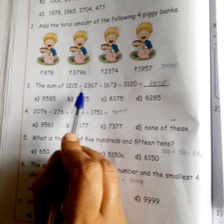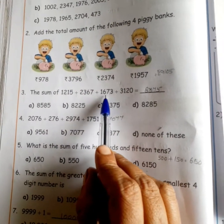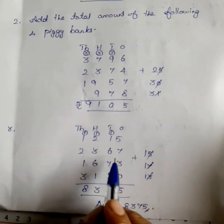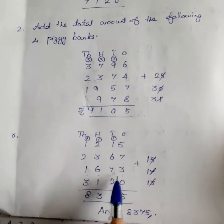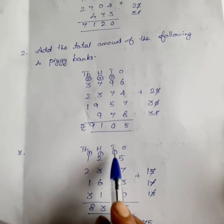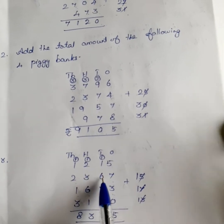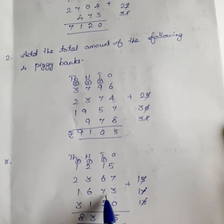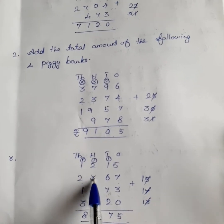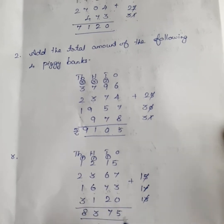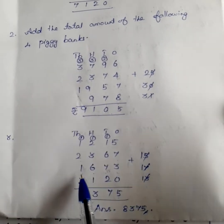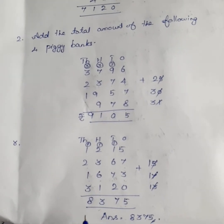The sum of 1,215 plus 2,367 plus 1,673 plus 3,120. 7 plus 3 is equal to 10. 10 plus 5 is equal to 15. Remaining 1. 1 plus 1 is equal to 2. 2 plus 6 is equal to 8. 8 plus 7 is equal to 15. 15 plus 2 is equal to 17. Write 7, remaining 1. 1 plus 2 is equal to 3. 3 plus 3 is equal to 6. 6 plus 6 is equal to 12. 12 plus 1 is equal to 13. Remaining 1. 1 plus 1 is equal to 2. 2 plus 2 is equal to 4. 4 plus 1 is equal to 5. 5 plus 3 is equal to 8. So, the answer is 8,375.